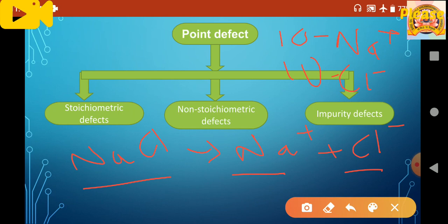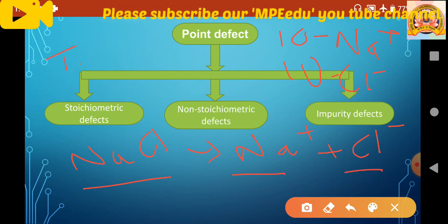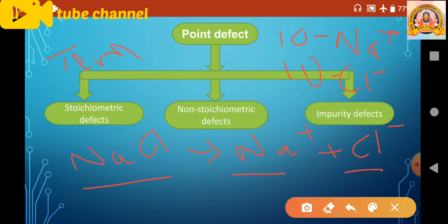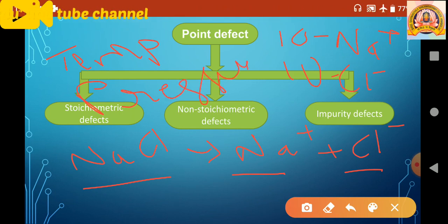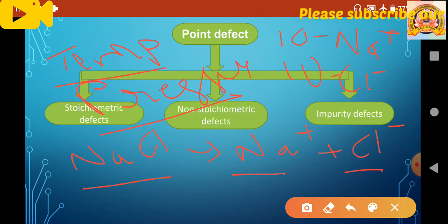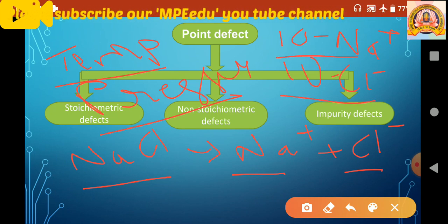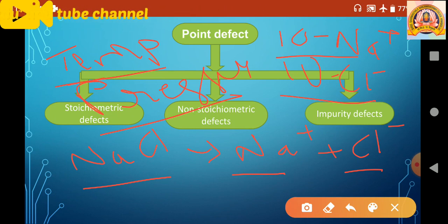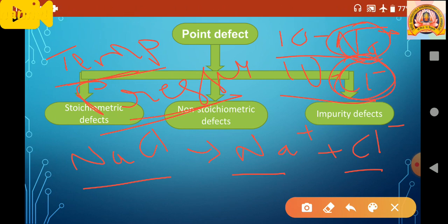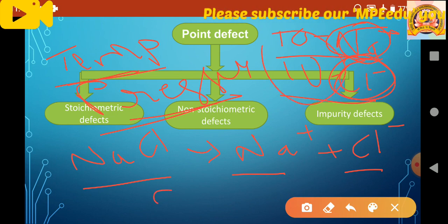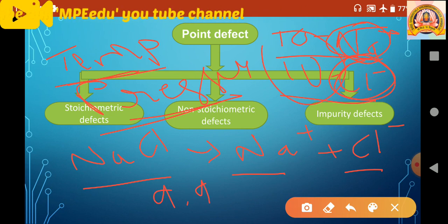First, we will discuss point defects, as per the NCERT syllabus. Point defects are classified into three types: the first type is stoichiometric defect, the second type is non-stoichiometric defect, and the third one is impurity defect. The word stoichiometry means balance.